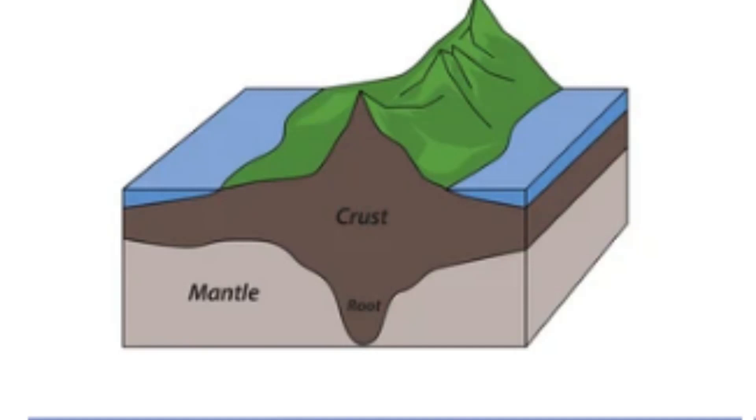In addition to natural processes, human activities such as the extraction of groundwater, oil, and gas can also affect isostatic equilibrium. As these materials are removed from the Earth, the weight of the overlying crust is reduced, which can cause the crust to rise in response. This can lead to subsidence, which can in turn cause flooding and other geological hazards.